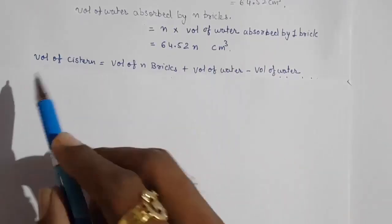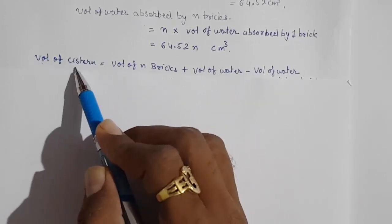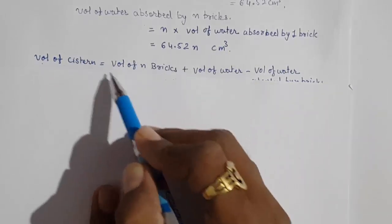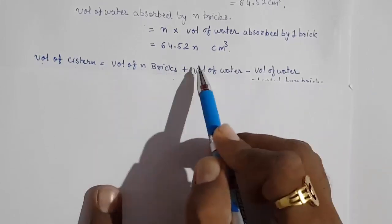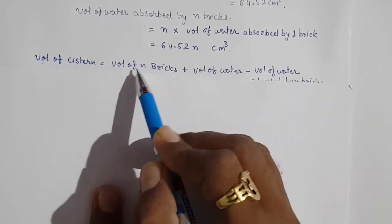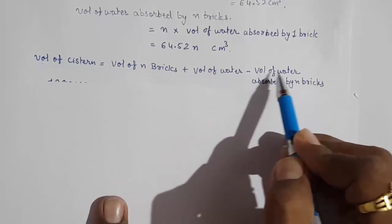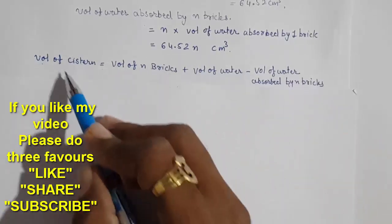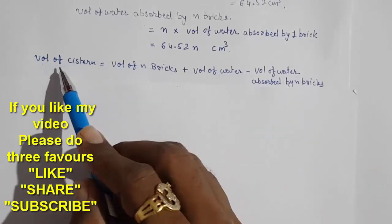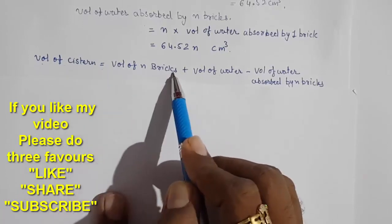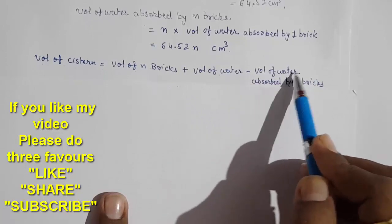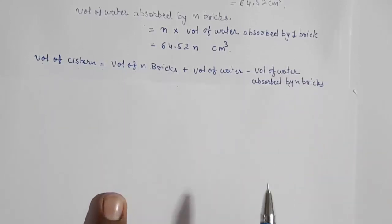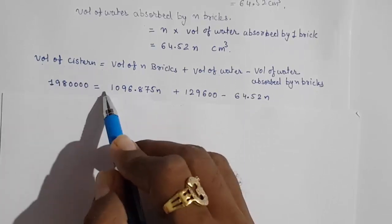Now understand this systematically. Volume of tank = volume of n bricks + volume of water − volume of water absorbed by n bricks. When bricks are placed inside the tank, the tank is full to the brim. The bricks occupy volume, the water is already there, but the bricks absorb some water, so we subtract that absorbed water from the total.